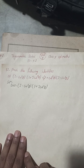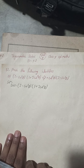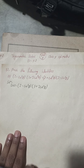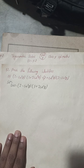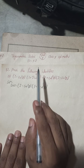Hi everybody, welcome back to Bimal Sarji's YouTube channel. This is question number 12a — prove the following identity — Exercise 9.2, Trigonometric Ratios, Unit 9, Class 9 OPT Mathematics. This is based on a request from one of my YouTube subscribers to solve questions 9 to 13.